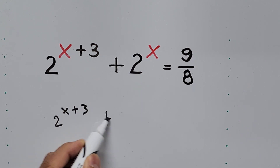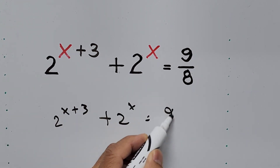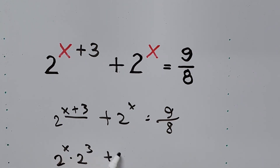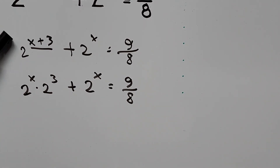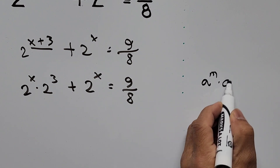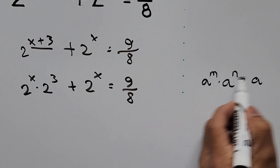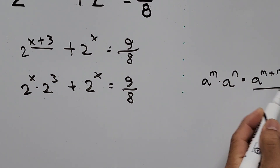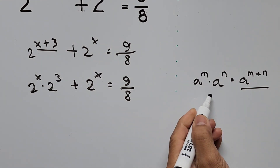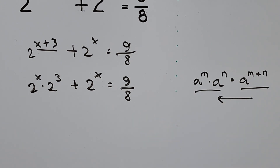We have 2 to the power of x plus 3, plus 2 to the power of x, equals 9 over 8. On the left side we apply the exponent product rule — the formula states that a to the power of m times a to the power of n equals a to the power of m plus n. We use this rule in reverse, rewriting 2^(x+3) as 2^x times 2^3.